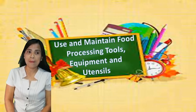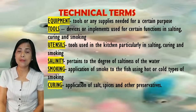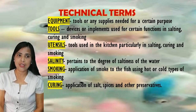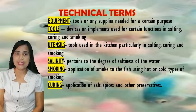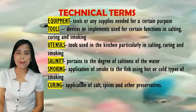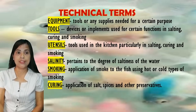Let us learn today. First, the technical terms. Equipment: tools or any supplies needed for a certain purpose. Tools: devices or implements used for certain functions in salting, curing, and smoking. Utensils: tools used in the kitchen, particularly in salting, curing, and smoking. Salinity: pertains to the degree of saltiness of the water. Smoking: application of smoke to the fish using hot or cold types of smoking. And curing: application of salt, spices, and other preservatives.